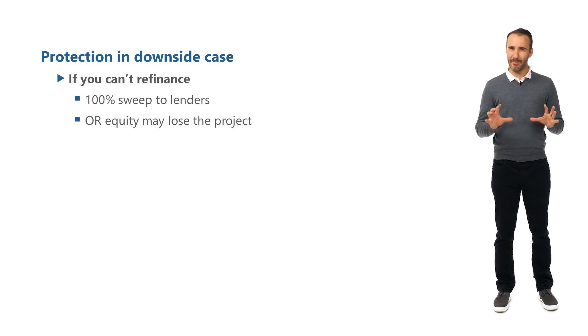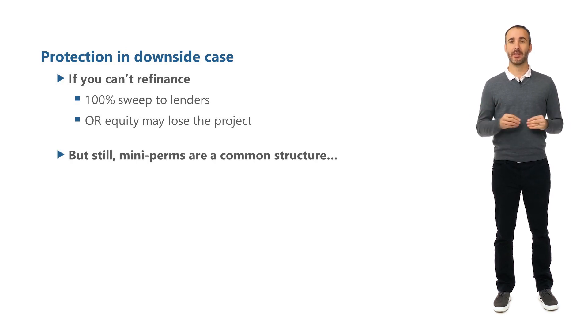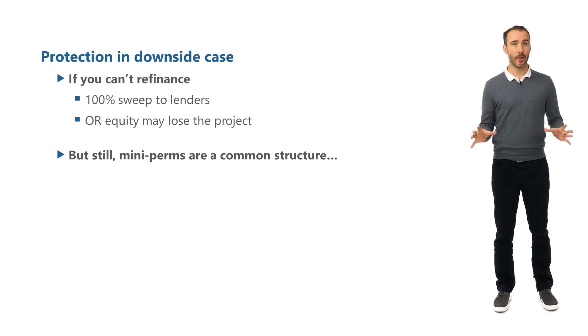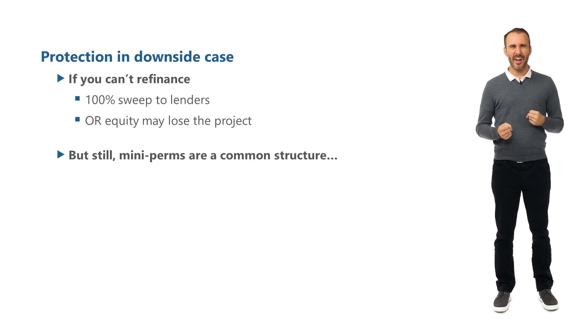Mini-perms are a common structure, given lenders can't always lend money for 30 years in reality, so it may be the only option — but they're kind of scary too.